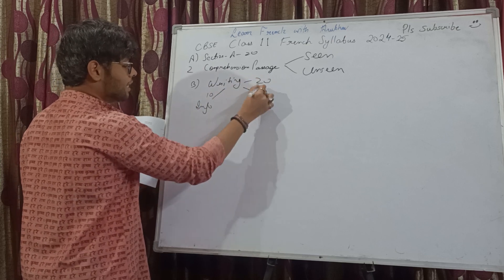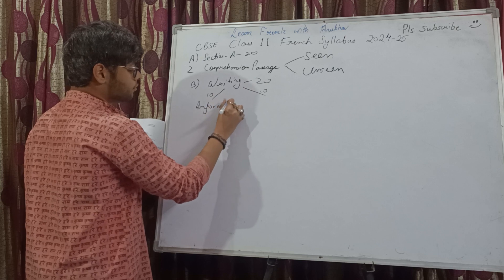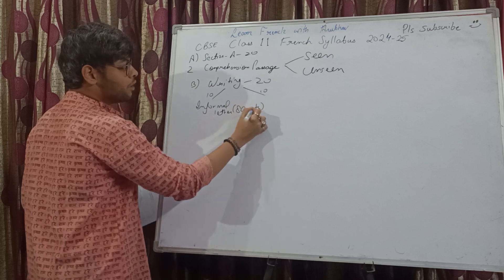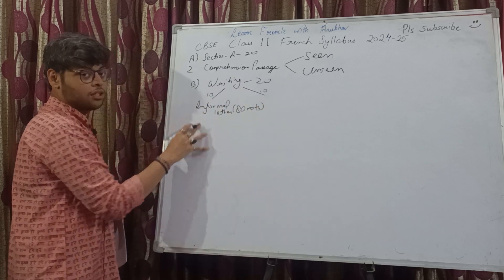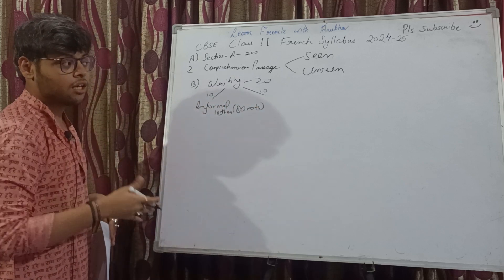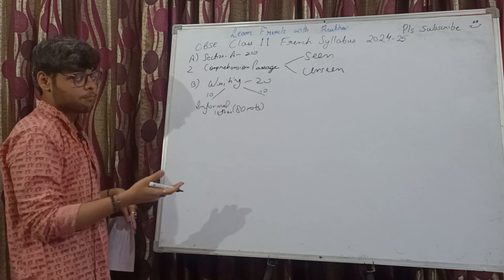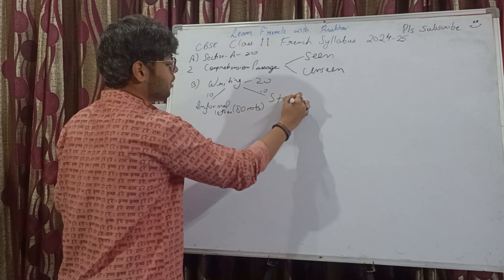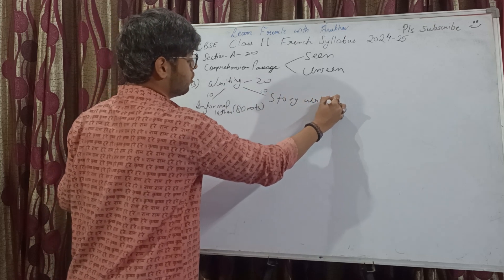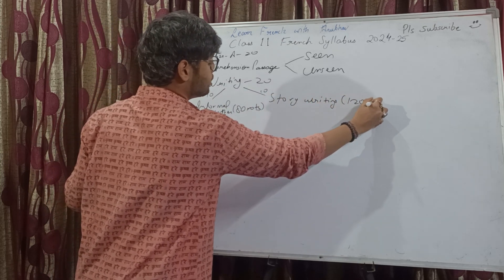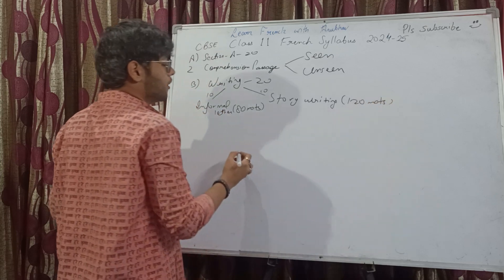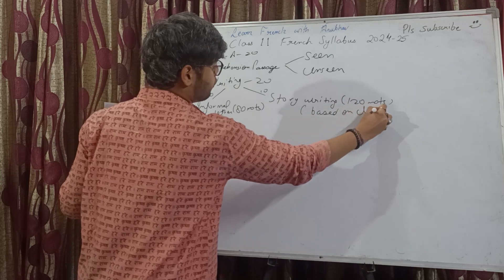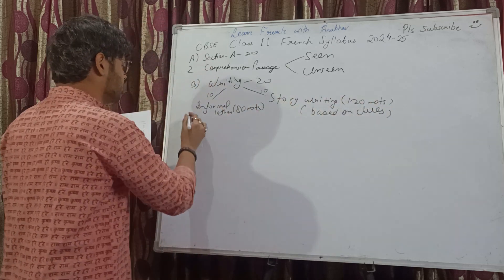Writing: two things again, 20 marks, 10 marks each. Informal letter — 80 words, sometimes you do get 120 words as well for a letter, so take care while reading the question from the question paper. If it's 80 words, follow that. And story writing — 120 words, based on clues. Clues are given; just knit a story out of it.